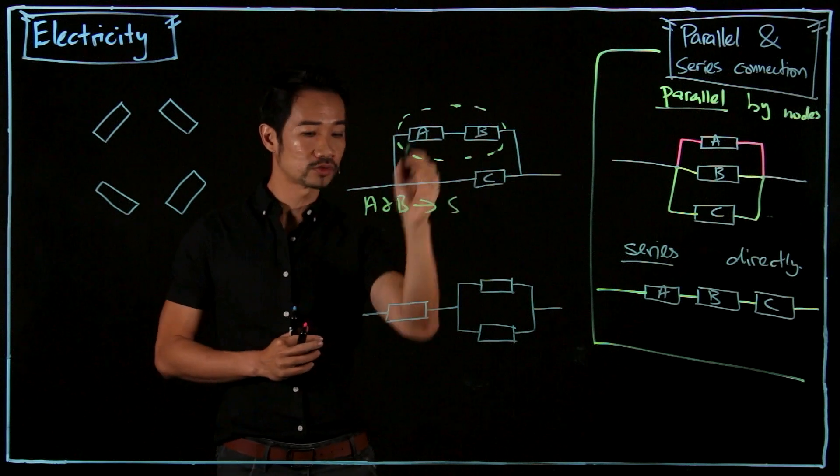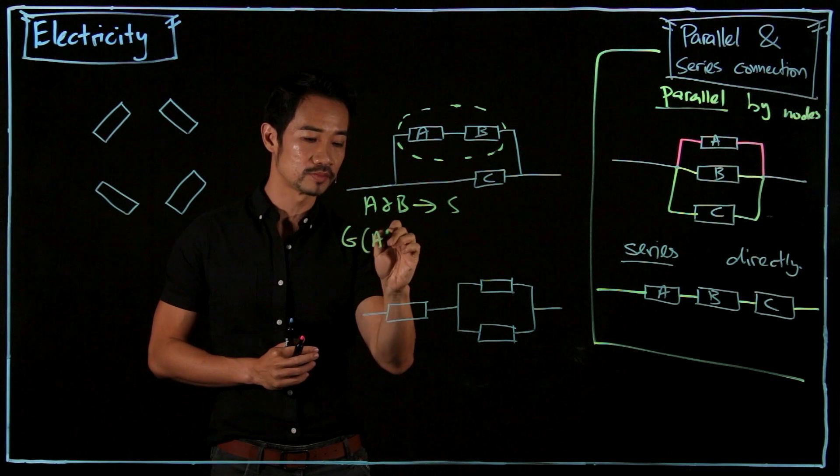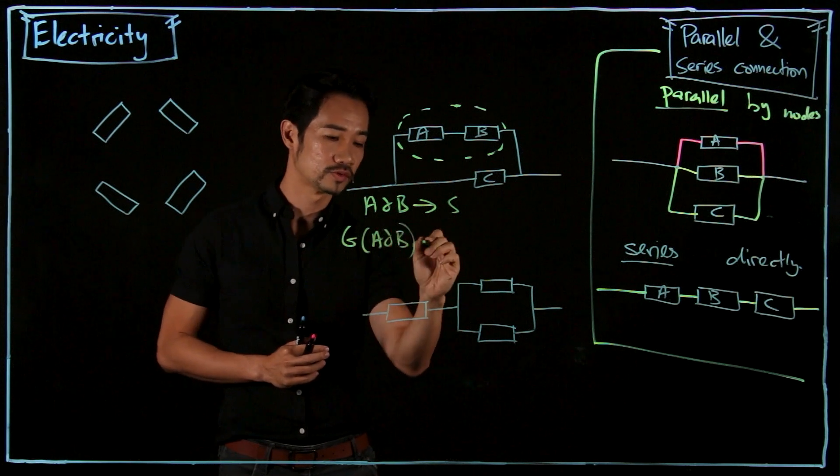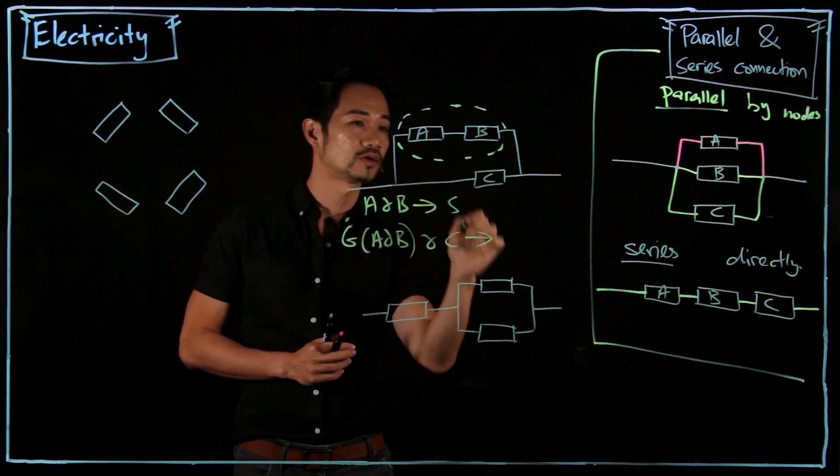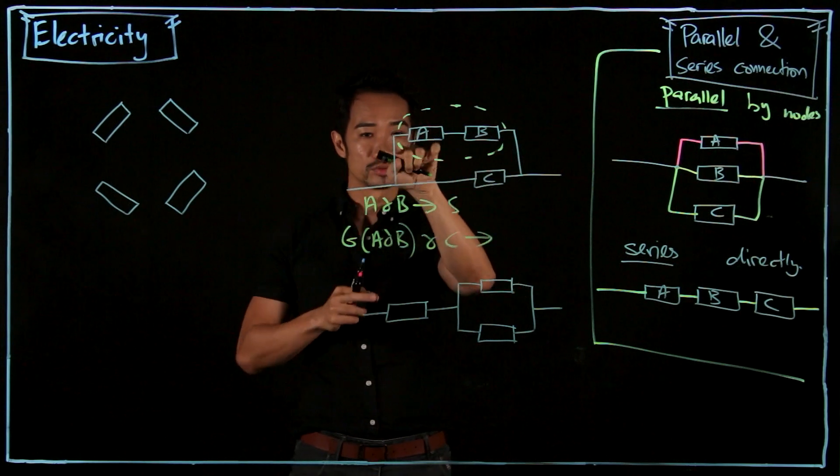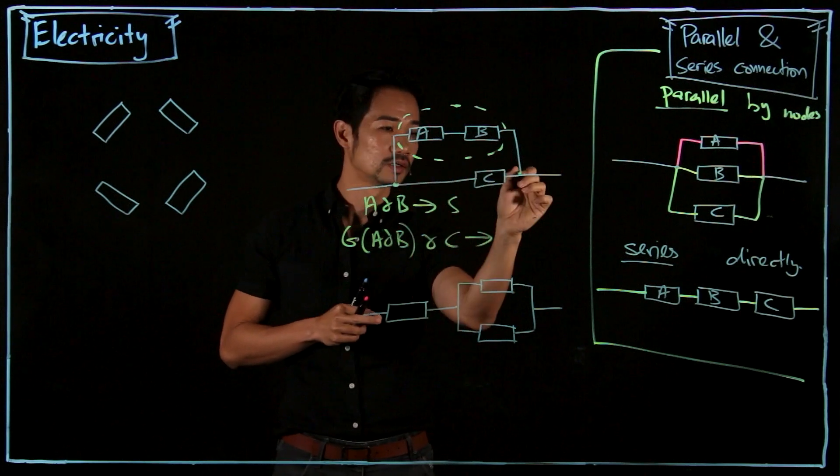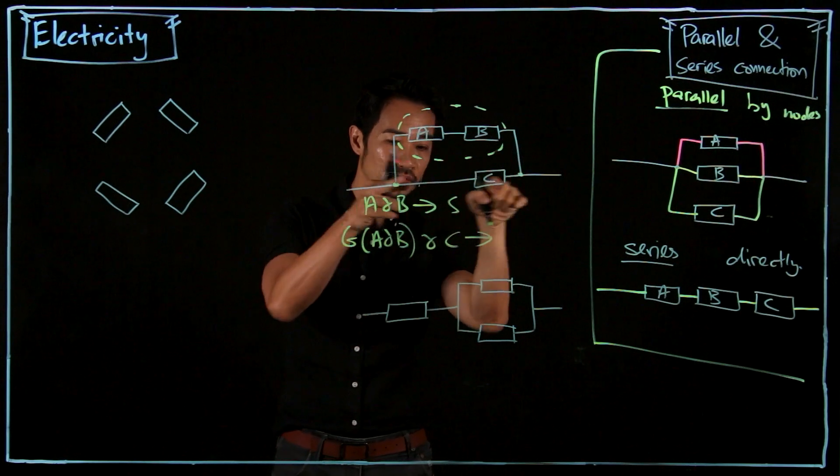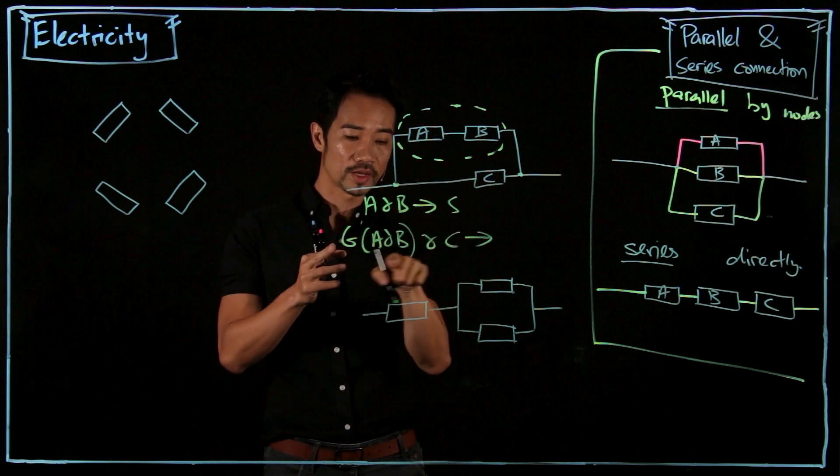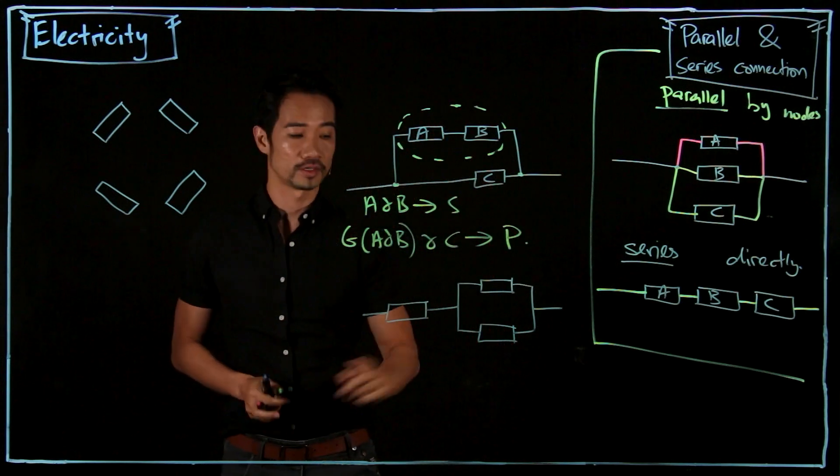So we see this whole thing as one group. So the group A and B, now with C. How are they connected? This whole thing to go to C. Oh, see? There is a node here. There is a junction. So this group A and B and C is parallel connection.